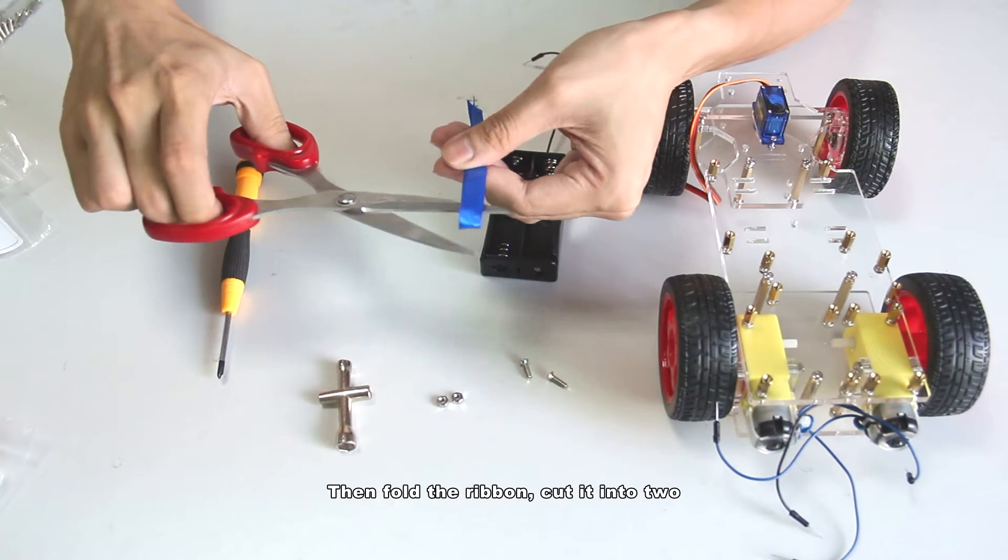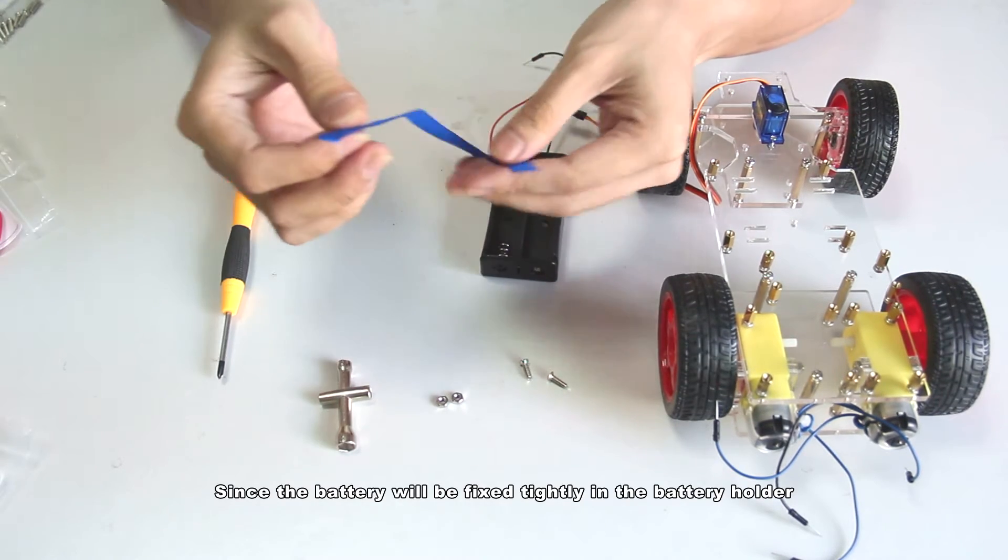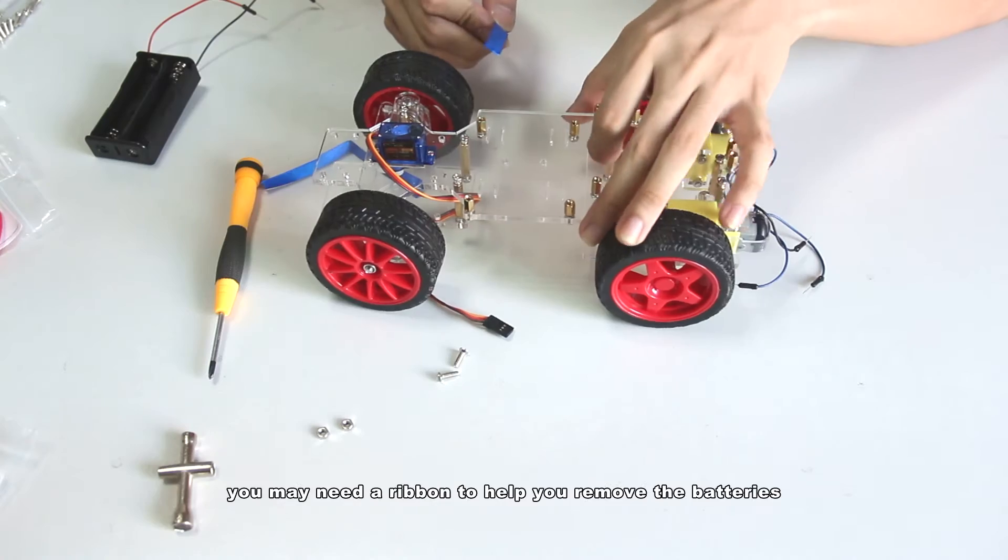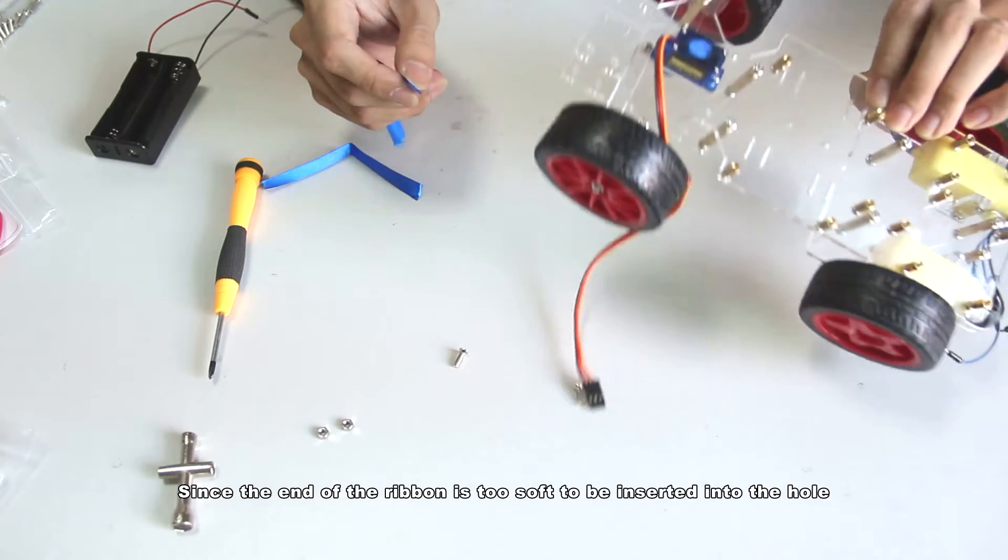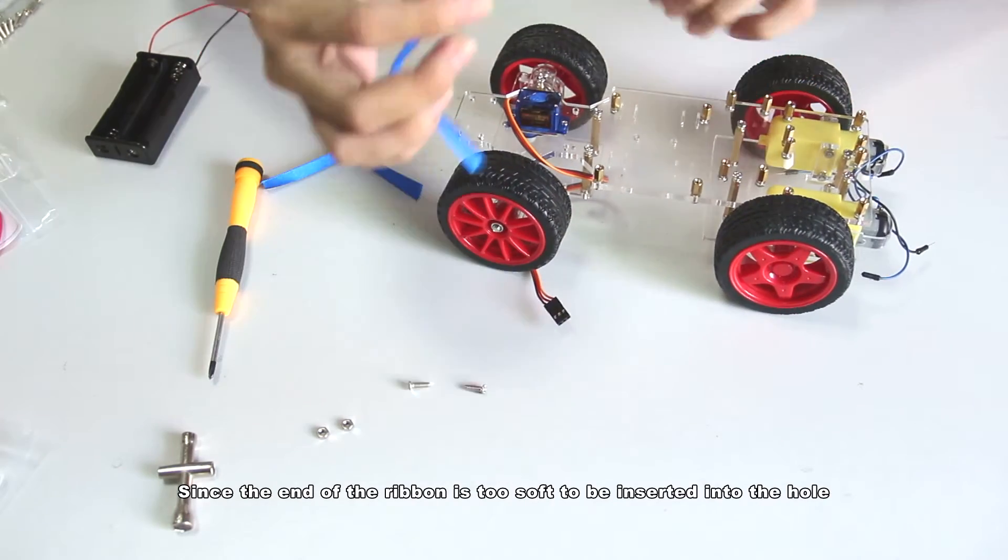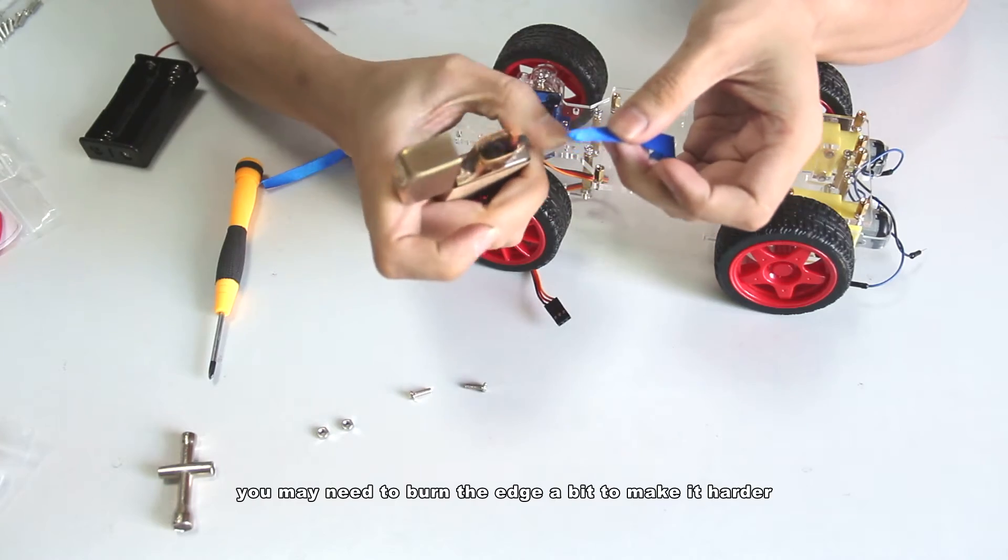Then fold the ribbon and cut it into two. Since the battery will be fixed tightly in the battery holder, you may need a ribbon to help you remove the batteries. Since the end of the ribbon is too soft to be inserted into the hole, you may need to bend the edge a bit to make it harder.